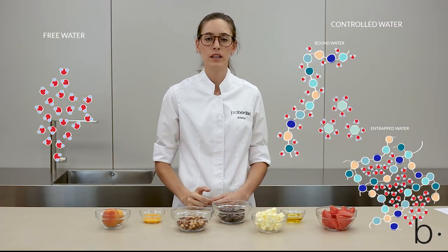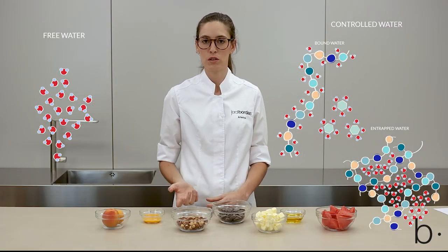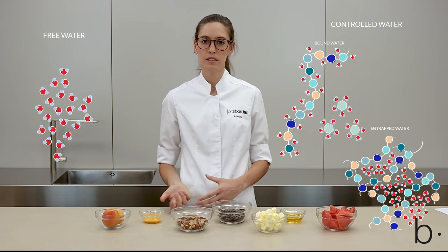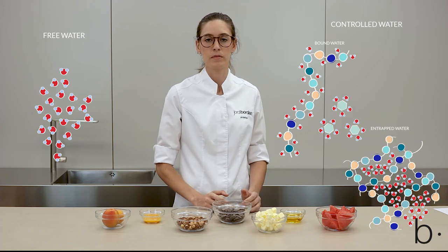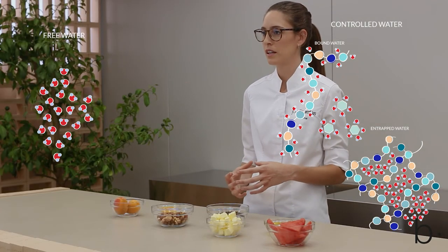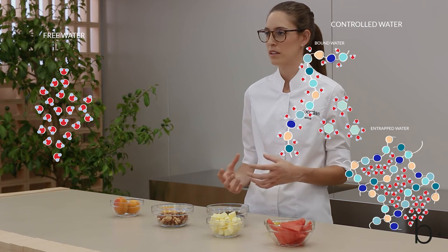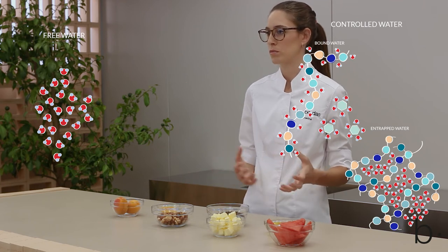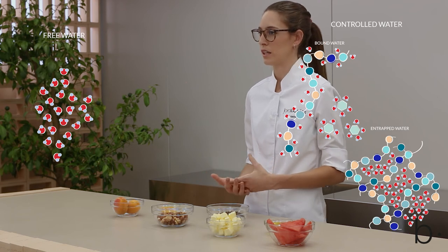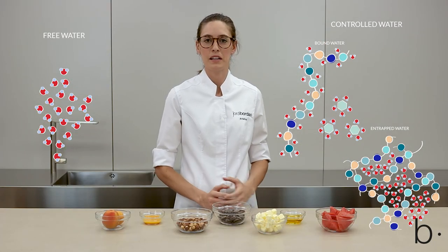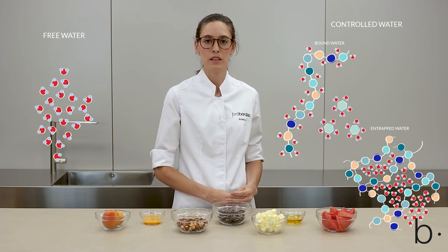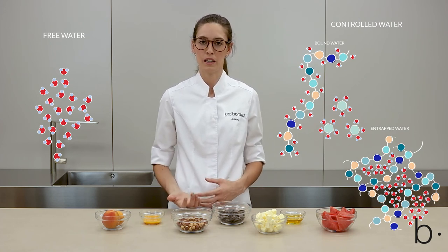On the other hand, controlled water is divided into bound water and entrapped water. Bound water is that which is interacting or forming bonds with other polar molecules like sugar or proteins — sometimes it is also called hydration water. Entrapped water is that which is physically retained within a three-dimensional net of macromolecules, as in pectin gels or with the egg proteins in a meringue.